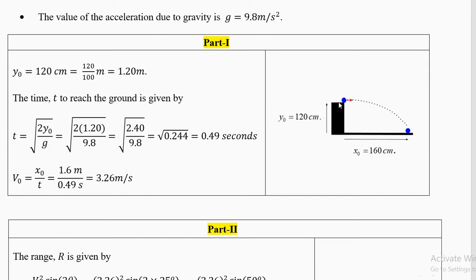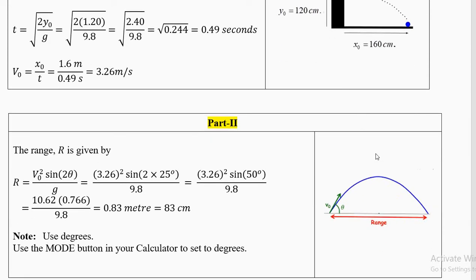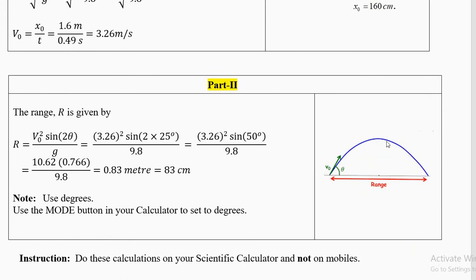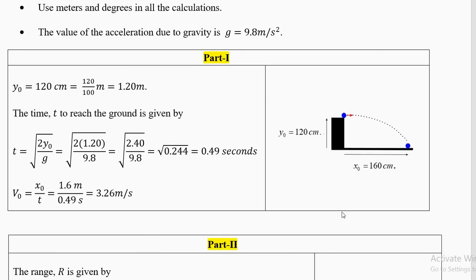In part 1 the launcher is on a table at a height. The total height will be the height of the table plus the small height of the launcher, which is about 15 to 20 centimeters. When you launch the ball horizontally it will fall at some distance — this distance has to be measured accurately, and it is 160 centimeters in this problem. In part 2 it will be launched at an angle of about 25 degrees, and you have to measure the range. Again it is a parabola.